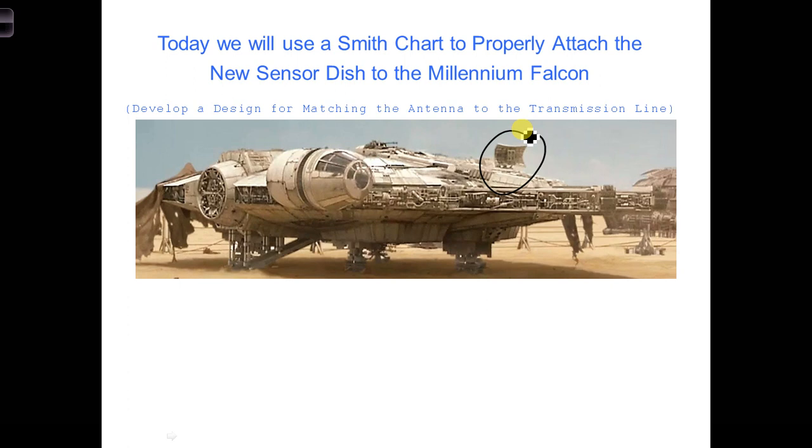Let's review for a moment. We ideally would like to have ZL equal to Z0. This would be the matched case, where the input impedance of the antenna already equals the impedance of the transmission line.